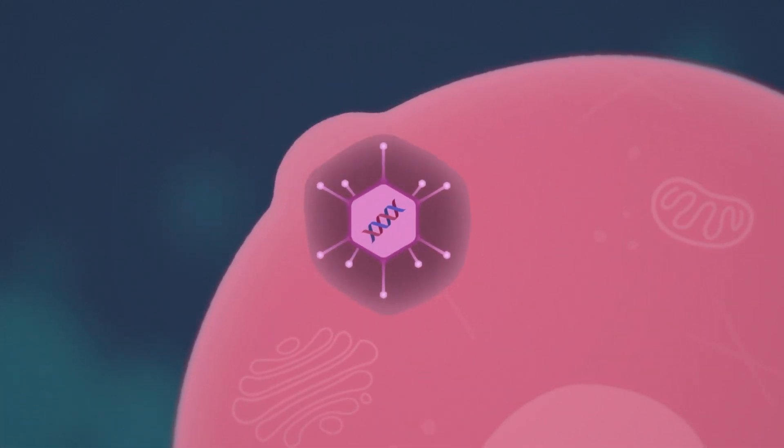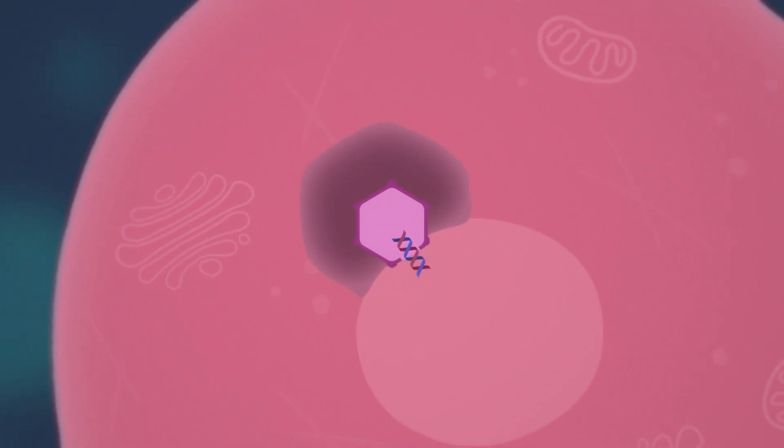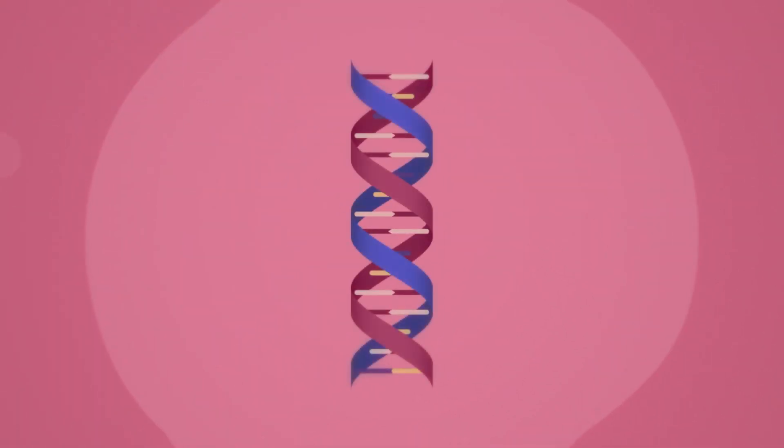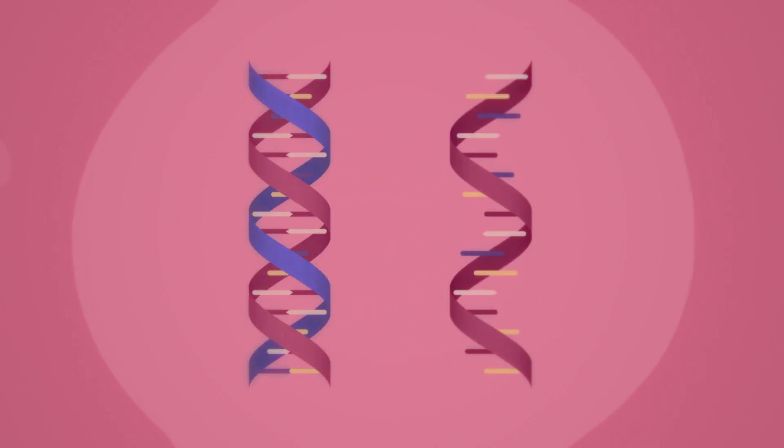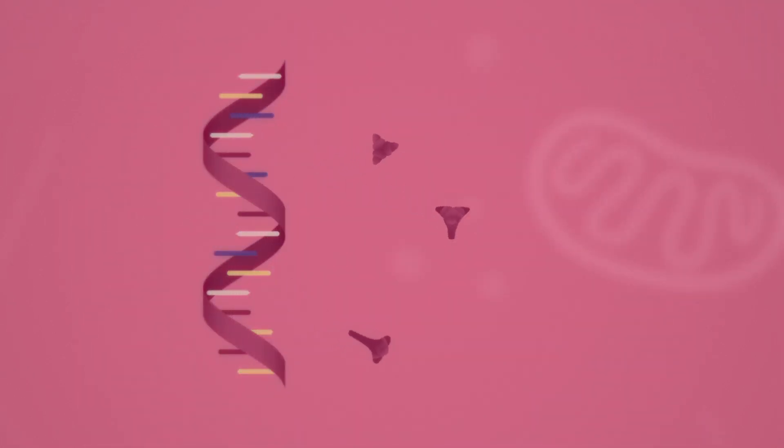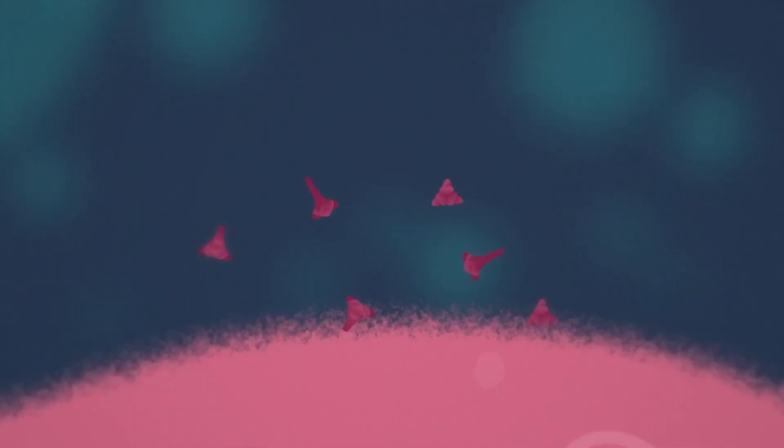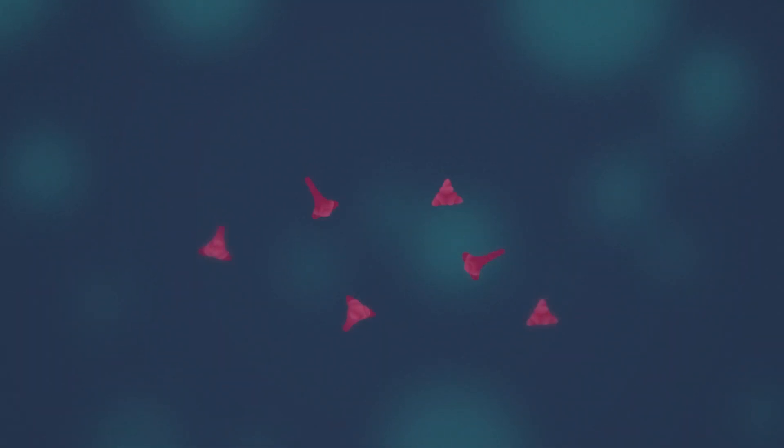It then makes its way to the cell nucleus and the DNA enters it. Once inside, the DNA produces mRNA which reproduces the only thing it can: spike proteins. When the cell dies naturally, the spike proteins are found by the immune system.